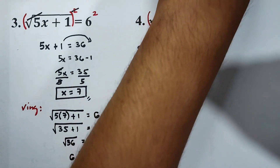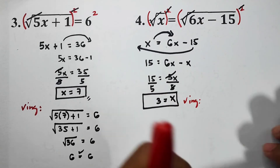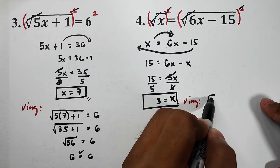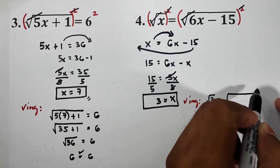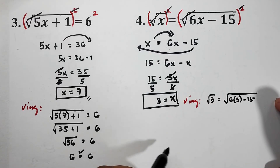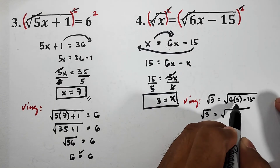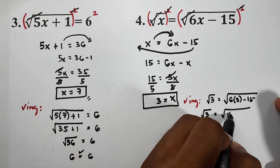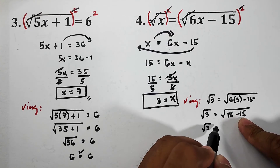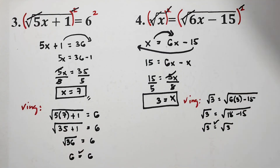Let's do the checking. We replace x with 3: square root of 3 is equal to square root of 6 times 3 minus 15. Simplifying the right side: 6 times 3 is 18, minus 15, which gives us square root of 3. So we have square root of 3 is equal to square root of 3 — they are equal, meaning the value of x which is 3 is correct.